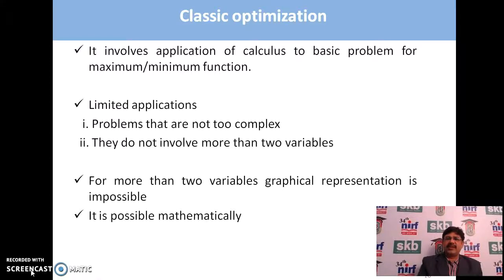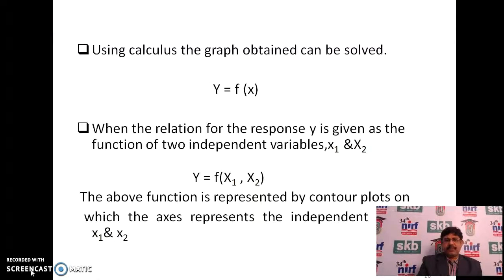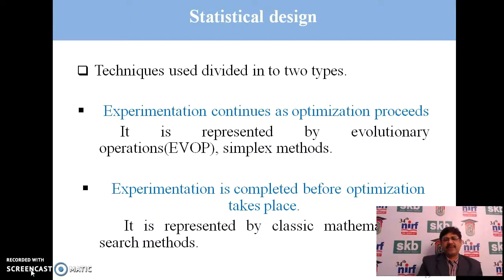Classic optimization involves the application of calculus to basic problems for finding maximum and minimum functions, but it has limited applicability. It works for problems that are not too complex and have no more than two variables. For more than two variables, graphical presentation becomes very complicated. Using calculus, we can solve this with the help of regression analysis. Statistical design is divided into two types: first, where experimentation continues as optimization proceeds — called evolutionary operations and the simplex method; and second, where experimentation is completed before the optimization test, represented by classical mathematical models and the search method.